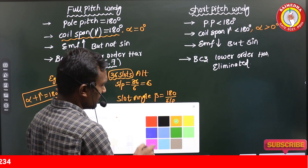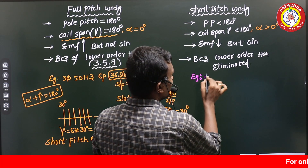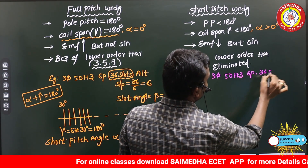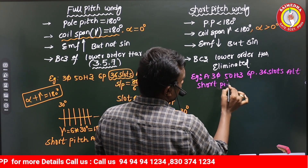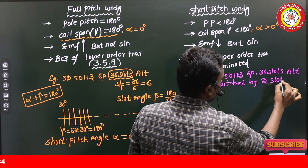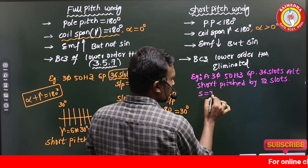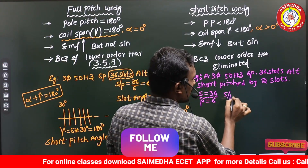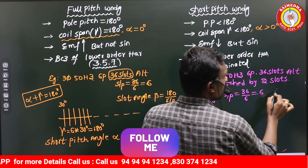Now let's take the same example for short pitch winding — a three-phase, 50 Hz, six-pole, thirty-six slot alternator — short pitched by two slots. Slots per pole is still thirty-six divided by six, which equals six. But the question states that two slots are short pitched, so alpha equals two slots.